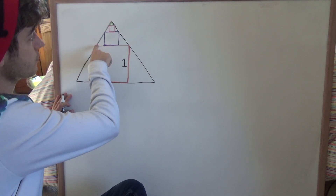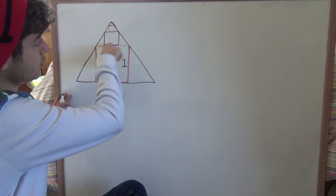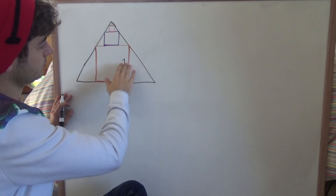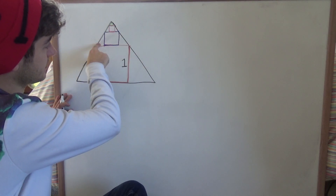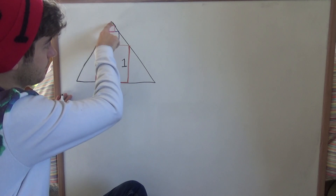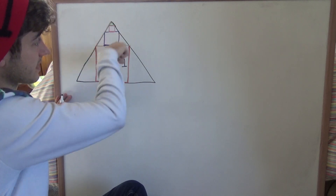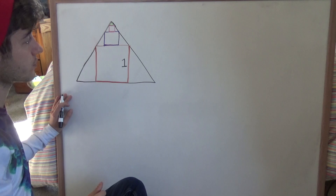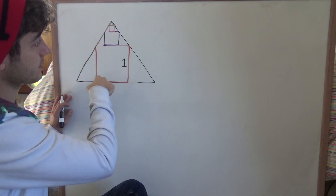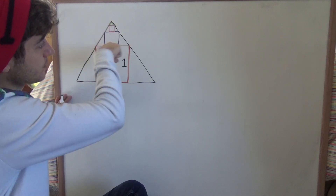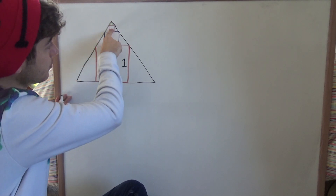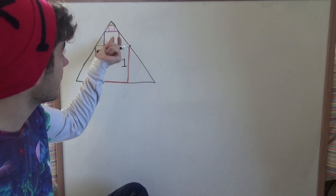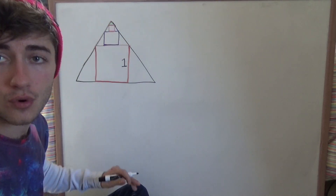And then we see that we have another equilateral triangle up here, because since this is 60 degrees and this is 60 degrees, this is also 60 degrees. This has to be a similar shape, and so I've inscribed inside of that another square with the same properties as the first one, but in this smaller equilateral triangle, and then another one on top of that, and so on and so forth, getting infinitely tiny as they approach the corner.